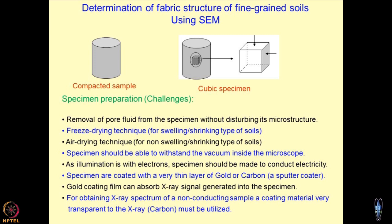Freeze drying becomes very difficult when minerals are swelling and shrinking, because the moment you take the sample out and keep it in the atmosphere, evaporation takes place and the sample cracks. Once the sample cracks, you will not get the real picture of what the sample used to be in the triaxial setup. Air drying cannot be utilized here. One has to be very careful — different setups are available for vacuum drying or freeze drying. When applying vacuum, the sample must be able to withstand the pressure.